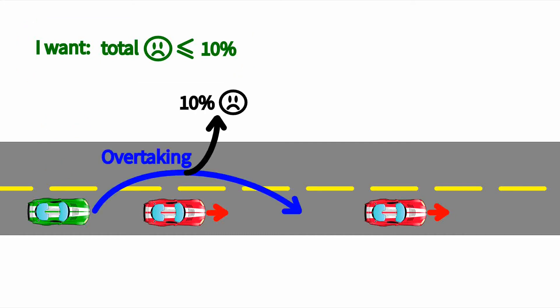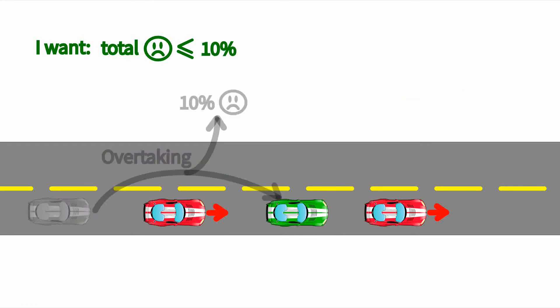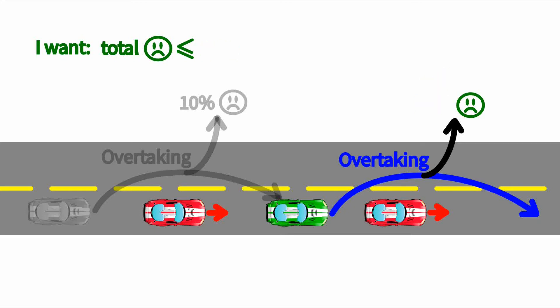At the first step, planning to overtake the first car, then follow the second car locally satisfies the 10% chance constraint. On replanning at the second step, overtaking again also locally satisfies the chance constraint.